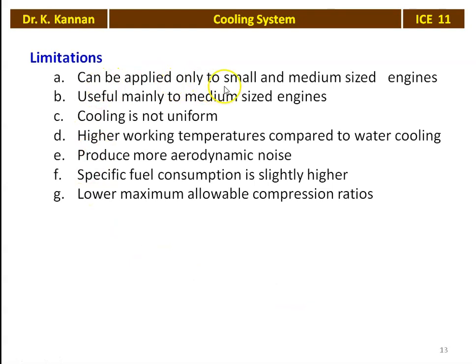The limitations of the air cooling system: it can be applied only to small and medium-sized engines — large capacity engines cannot use air cooling; cooling is not uniform, as the front side of the engine block is cooled effectively while the rear side is not exposed to air circulation; working temperature is higher compared to water cooling; it produces more aerodynamic noise as air flows through the fins; specific fuel consumption is slightly higher; and the maximum allowable compression ratio is lower, so it cannot be used for high compression ratio engines. That is why two-wheelers use air cooling.